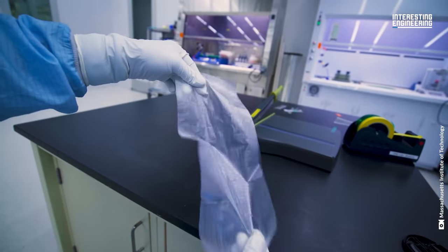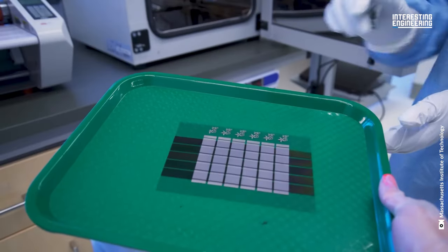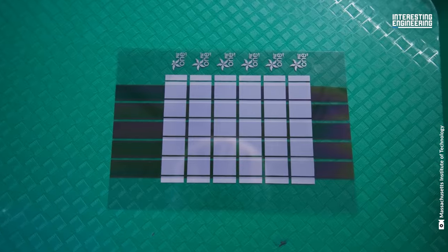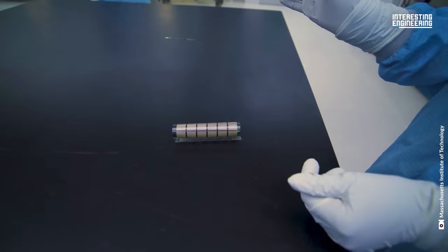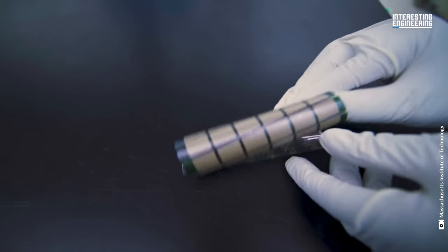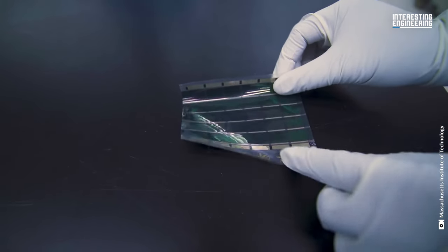Much thinner than a human hair, yet they're robust and efficient. These cells are a mere one hundredth the weight of conventional solar panels, yet they generate 18 times more power per kilogram, all thanks to semiconducting inks and scalable printing processes.